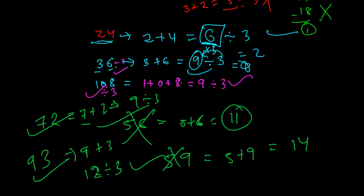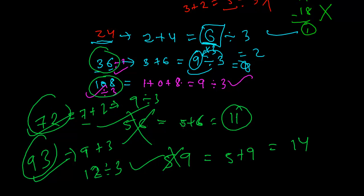So, you need to check whether the sum of the digits is a multiple of 3 or not — whether the sum of the digits is divisible by 3 or not. If it is divisible, then the whole number is also divisible by 3, otherwise not. In the next video, we will be learning the divisibility test by 4.